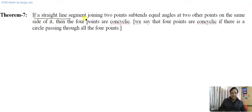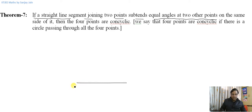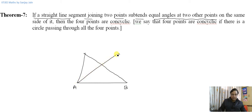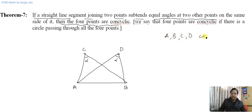The theorem says: if a straight line segment joining two points subtends equal angles at two other points on the same side of it — that is, if AB is the line segment and there are two points on the same side of AB where these angles are equal — AB subtends equal angles at these two points, meaning this angle is equal to this angle. Then these four points are concyclic, that is, A, B, C, and D are concyclic.